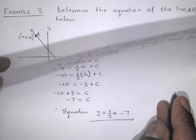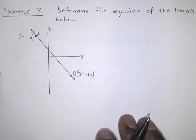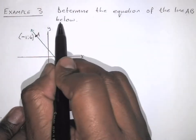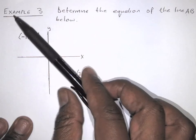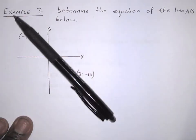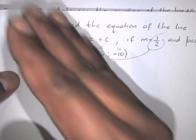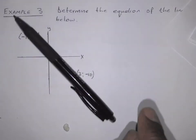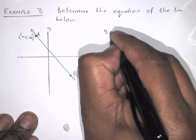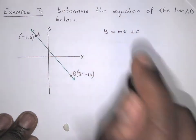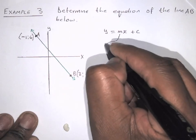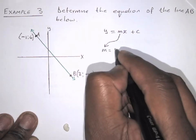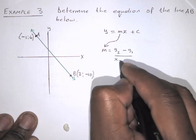Let's look at one more problem. Here they say: determine the equation of the line AB below. You can see that this line is slanted like that. So if your line is slanted, it has the standard form y equals mx plus c, just like in the previous one. We need to find m and c. We say if the line is slanted, the standard form is y equals mx plus c. Now we have a problem because we don't know m, so we need to find m. m is the gradient.